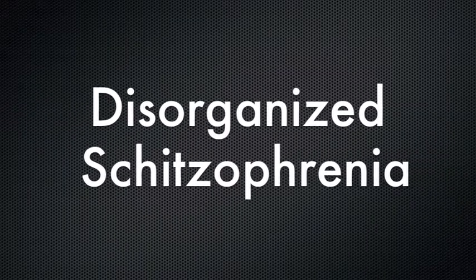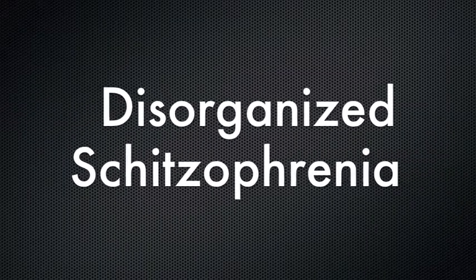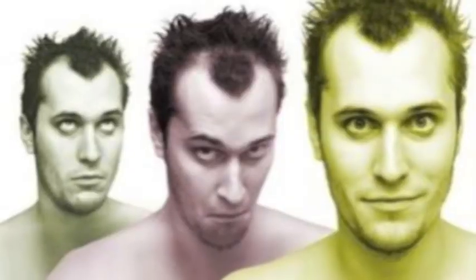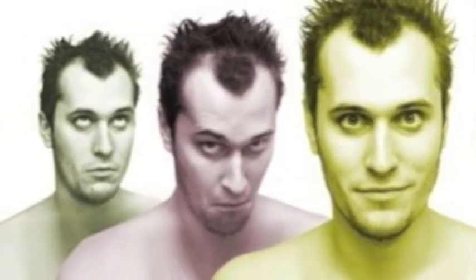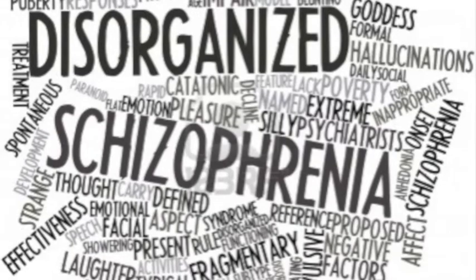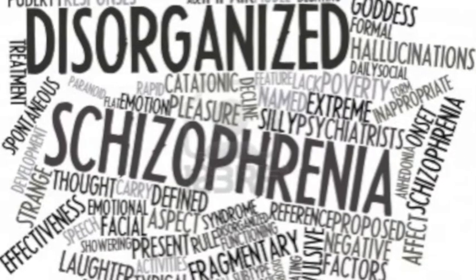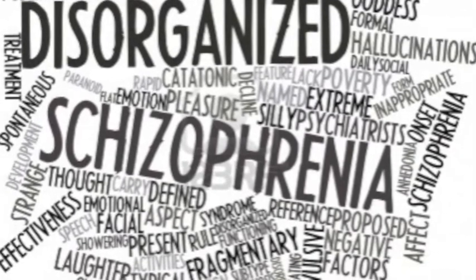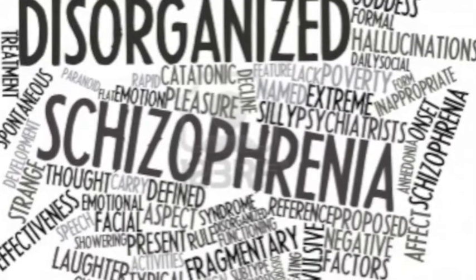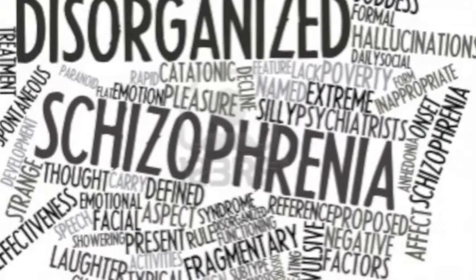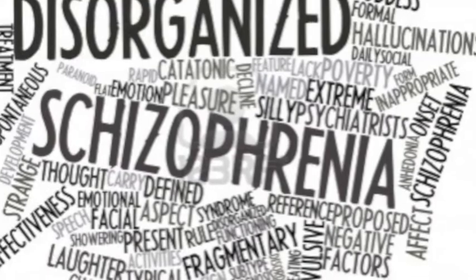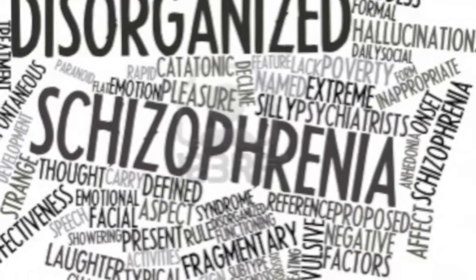Unlike paranoid schizophrenia, disorganized schizophrenia is accompanied by multiple physical symptoms. Patients often have trouble expressing their thoughts through written and oral communication because their speech is so disorganized. They also make up their own words, dress bizarrely, exhibit inappropriate emotions, and lack emotional affect.